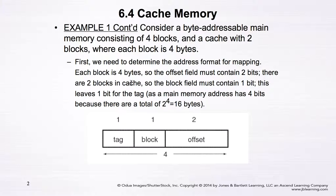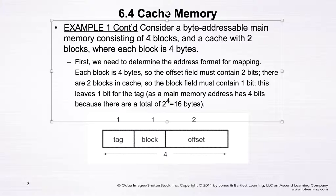We have two blocks in the cache, so the block field needs one bit to represent the different blocks. That gives us three bits total. The total number of bits for a memory address is four, because we have four blocks each of four bytes, giving 16 bytes, and two to the power of four equals 16. So we need four bits to represent one address in main memory, leaving one bit for the tag (four minus three equals one).